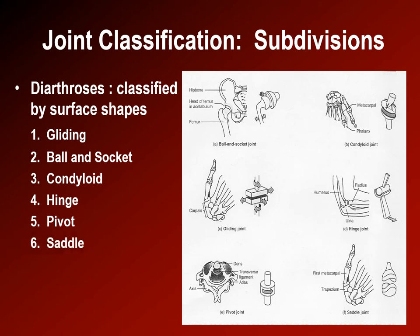Saddle joints are like two saddles facing each other and represent a very mobile type of joint. An example is the first carpometacarpal joint, where the trapezium meets the first metacarpal.